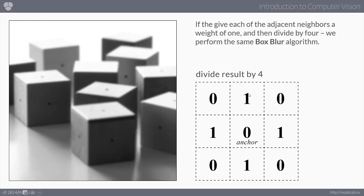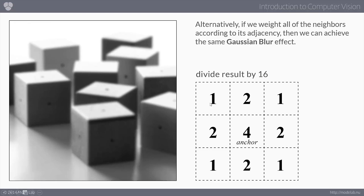We can implement the Gaussian blur with a kernel matrix of 1, 2, 1 / 2, 4, 2 / 1, 2, 1 — where immediately adjacent pixels are weighted by 2, the center by 4, and corners by 1. By changing these weighted values we get different effects. What's interesting is that you can create your own custom filters by changing any of these numbers to get really drastic effects, without relying on any tool maker's preset filters.